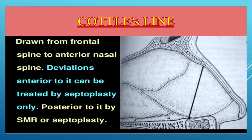When talking about SMR and septoplasty, one should know about the cartilage line, which is a landmark by which we decide what type of surgery should be done in a particular patient. The cartilage line is an imaginary line drawn from the anterior nasal spine to the frontal spine. Any septal deviations anterior to this line are treated by septoplasty only, whereas deviations posterior to it can be treated by either SMR or septoplasty.